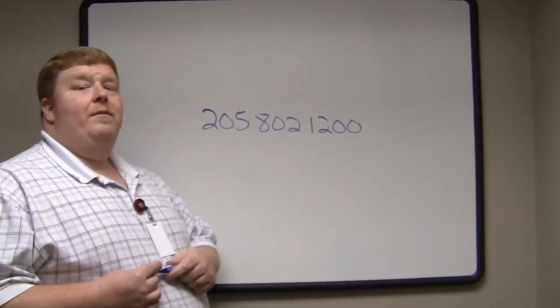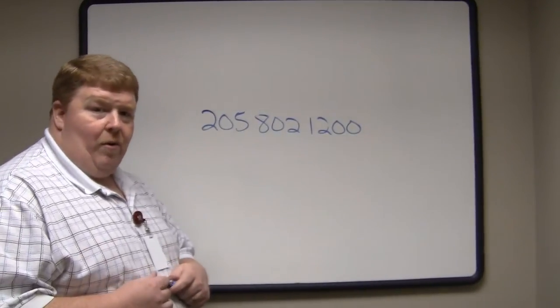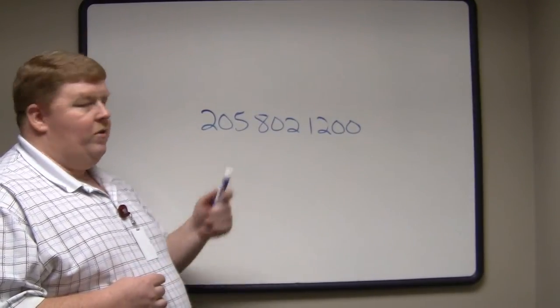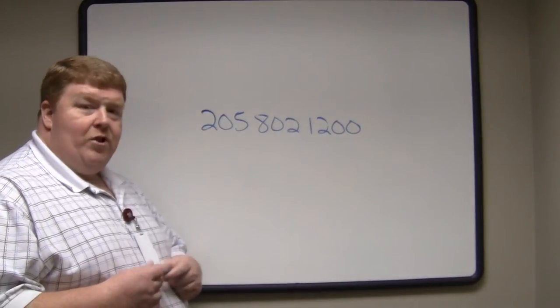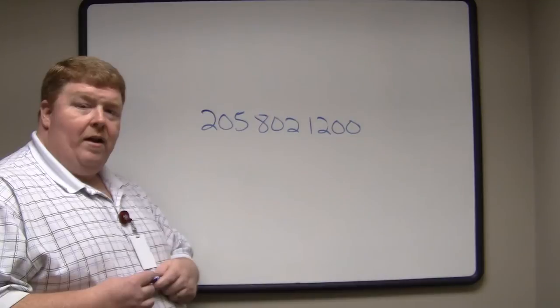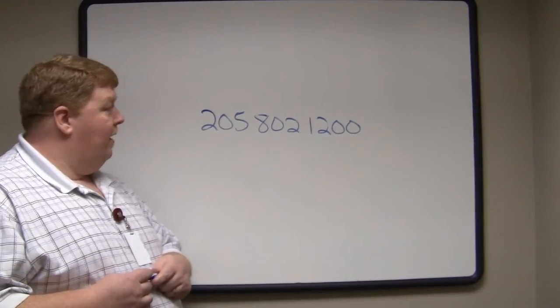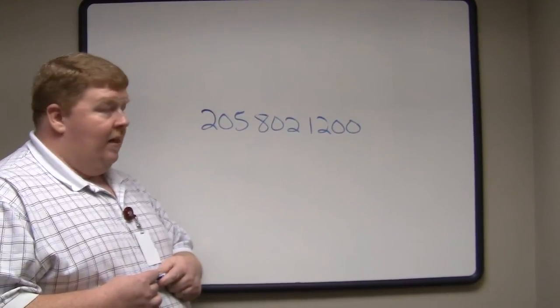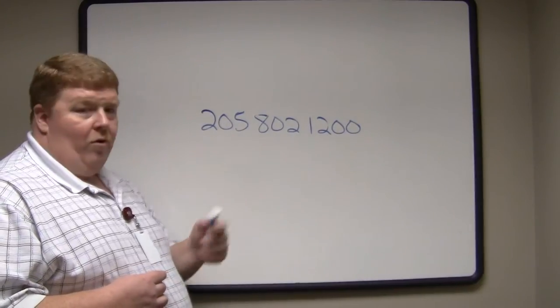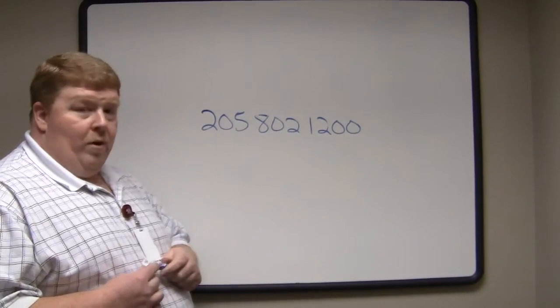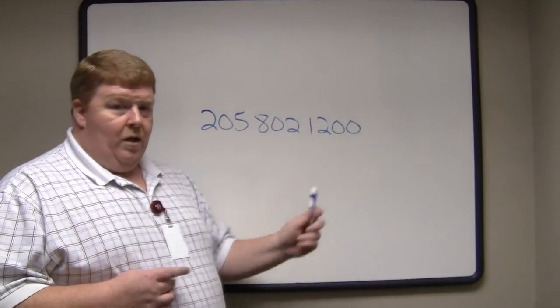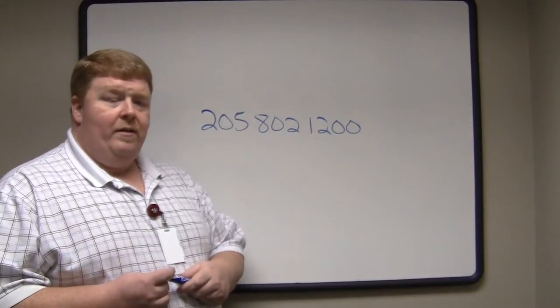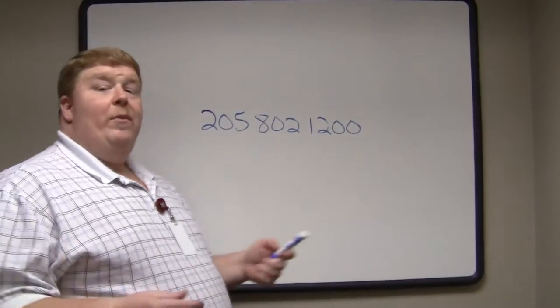If you look at this number, of course you can be in any part of the country or any part of the world, so this area code may not mean anything to you. But the Virginia College campus that I'm at right now is in Birmingham, Alabama, and the area code for Birmingham, Alabama is 205. The phone number for this campus is 802-1200. So let's break this down a little bit to things that you should and probably already know.